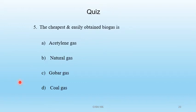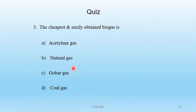Question 9 — The cheapest and easily obtained biogas is: A) acetylene gas, B) natural gas, C) gobar gas, D) coal gas. Gobar gas is the cheapest and easily obtained biogas. C is the correct answer.